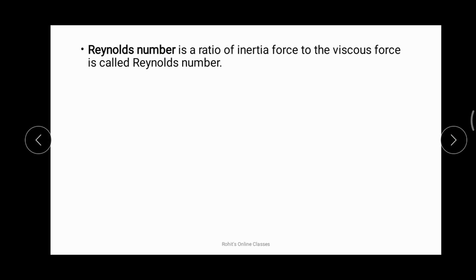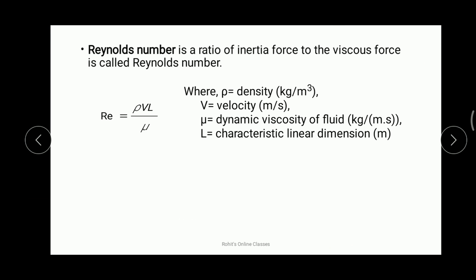The formula for Reynolds number is: Re = ρVL / μ, where ρ is density in kg/m³, V is velocity, μ is the dynamic viscosity of the fluid, and L is the characteristic linear dimension. For pipe flow, the diameter D is typically used instead of L. Using this formula, we can calculate the Reynolds number.